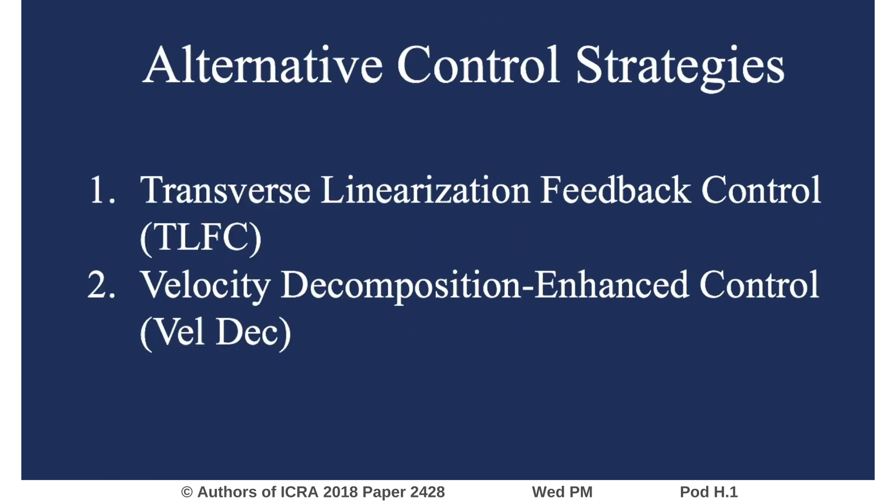Two alternative control strategies are compared throughout the paper: transverse linearization feedback control and velocity decomposition enhanced control. Transverse linearization feedback control improves robustness to velocity disturbances by adding feedback on the unactuated velocity, but practical implementation is limited due to the complexity of the optimal control problem. Velocity decomposition enhanced control uses simple heuristic rules to approximate the functionality of transverse linearization while retaining simplicity of implementation.